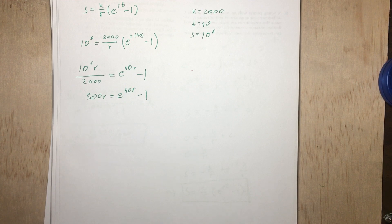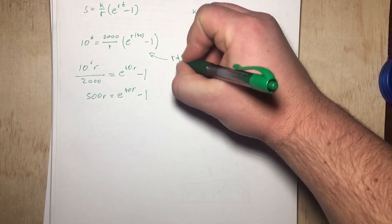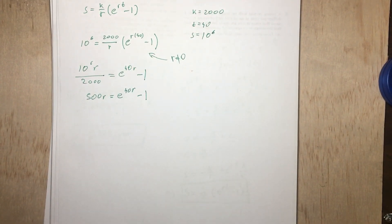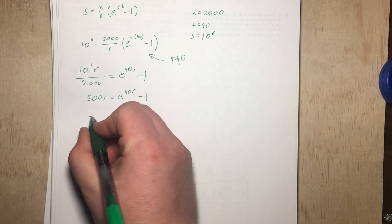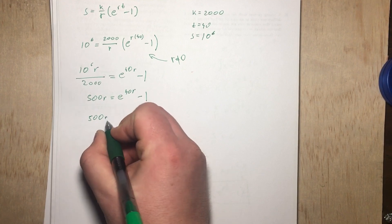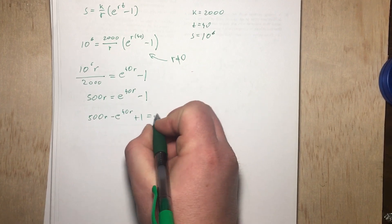The logarithm is not going to really help us, but we can use a product logarithm or a Lambert W function. However, that is not really going to help us all that much as well, because it would be kind of hard to come up with, first of all. But also, it's probably going to give us the solution of R equals zero, which is not a solution, because R cannot be zero, because we cannot divide by R. So, but what we can do is, we can bring everything to the other side, so we have 500R - e^(40R) + 1 = 0.